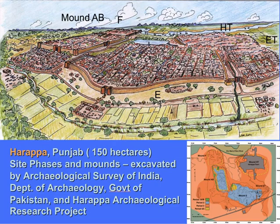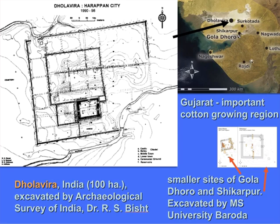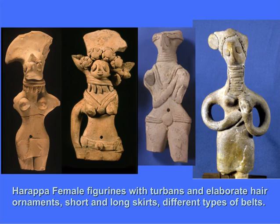Harappa grew gradually from a small settlement to multiple walled settlements over its history. Dholavira is an example of a three-walled city, clearly created for defense on an island, though there's no evidence it was ever attacked. It would have controlled all trade from Gujarat along the coast and through inland waterways to the main Indus Valley. There are smaller settlements around Dholavira, including Goladoro and Shikarpur, and Rojdi, which is right in the middle of Saurashtra.